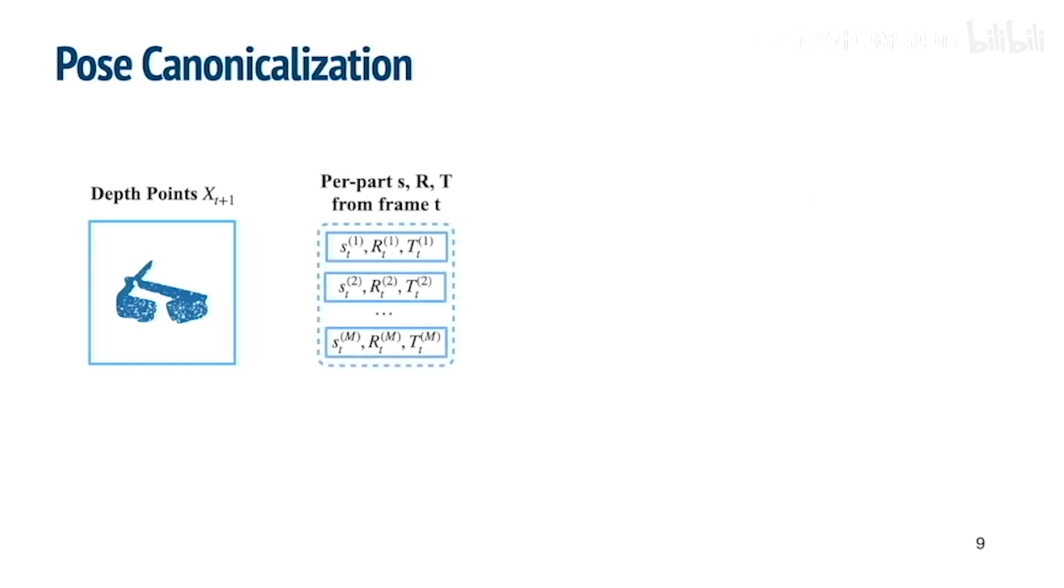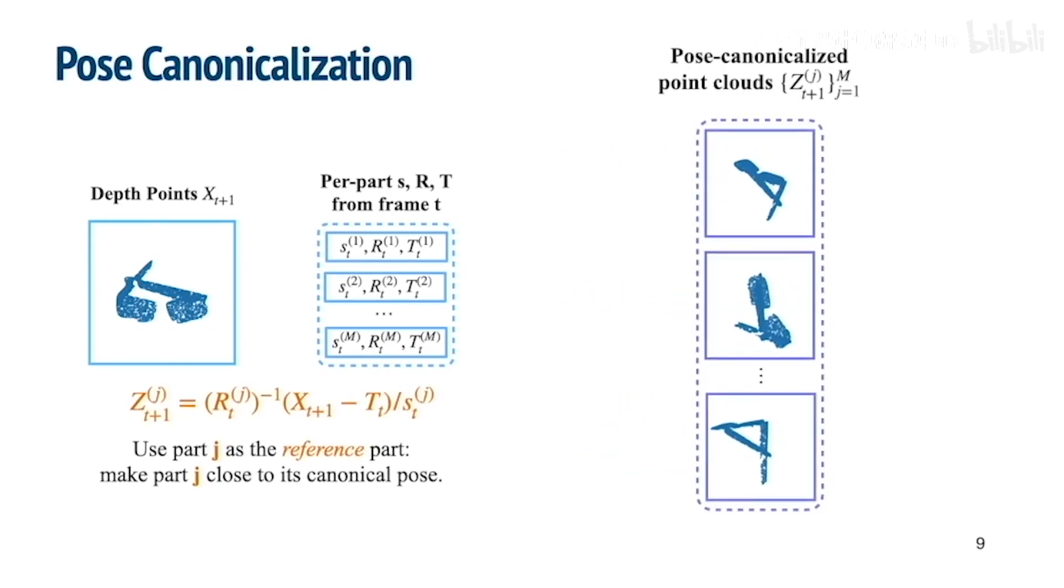Let's first delve into our pose canonicalization module and see how we leverage the predicted pose from the previous frame. Given the depth point cloud from the current frame and the per-part poses from the previous frame, for each part J, we multiply the depth point cloud with the inverse of the previously estimated part pose, so that part J gets close to its canonical pose. Now our network takes pose-canonicalized point clouds as input and only needs to output a small residual pose close to identity, which means we've simultaneously canonicalized both the input and output, thus significantly simplifying the pose estimation.